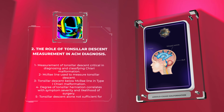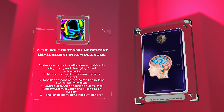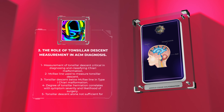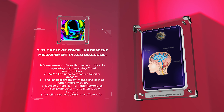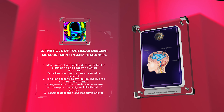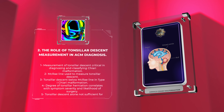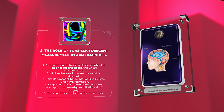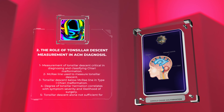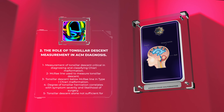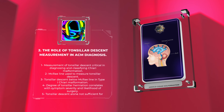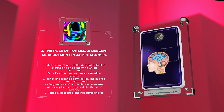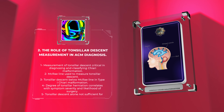Tonsillar descent measurement provides valuable information regarding the severity of herniation and helps guide treatment decisions. It is typically measured using the McRae line, drawn along the ventral surface of the spinal cord. The normal position of the tonsils is at or above this line. In type I Chiari Malformation, the tonsils are located below the McRae line. The degree of tonsillar herniation correlates with symptom severity and the likelihood of requiring surgery, though it should be interpreted alongside clinical features and other radiological findings.